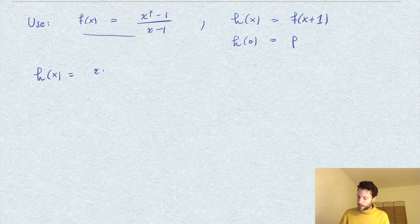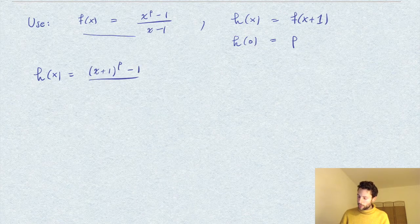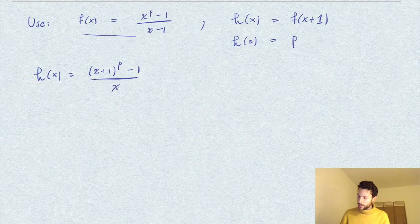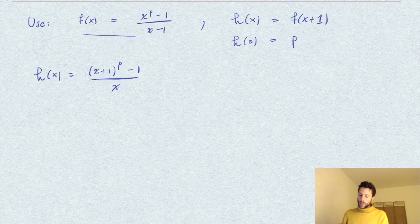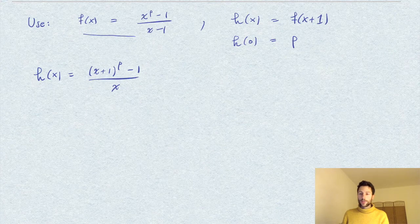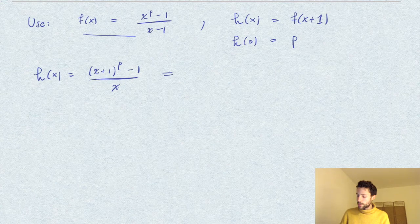Which of course can be written as—if I substitute in this expression here for f—I get h equals x plus 1 to the power p minus 1 over x. Then I want to study whether the coefficients of this polynomial are divisible by p, so I can also reduce this expression modulo p.